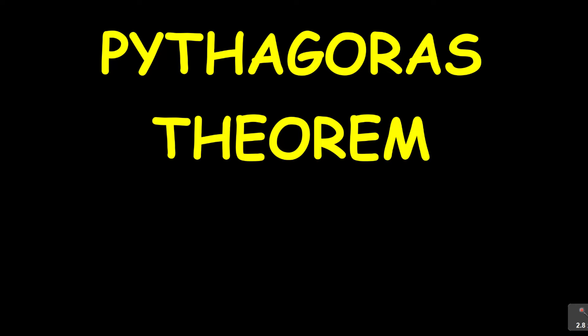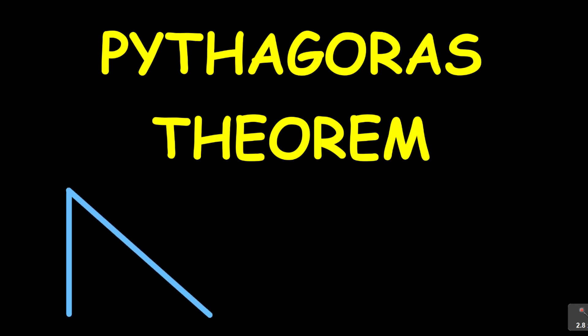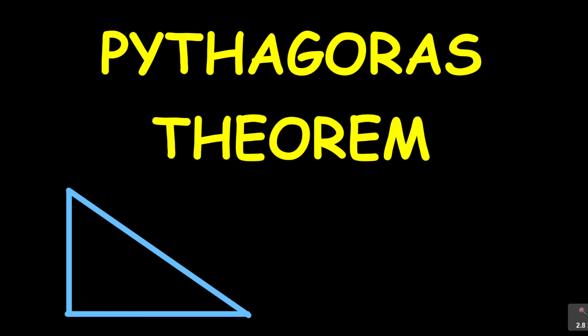What it means is you need to have a triangle — and the type of triangle you need when dealing with the Pythagoras theorem is a special type called a right angle triangle. This is a right angle triangle. What makes it a right angle? It's because of this 90 degrees. If you don't have that, unfortunately, it's not going to work.